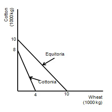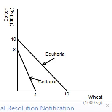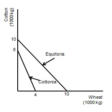Hello everyone and welcome to this little video on analyzing trade relationships. Here we've got a typical AP graph depicting two countries that can benefit from trade with each other. We've got Equatoria and Catonia, and they can produce cotton or wheat.